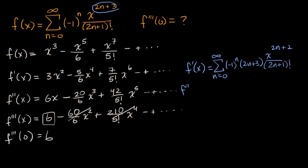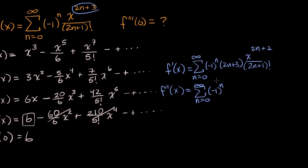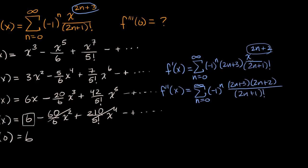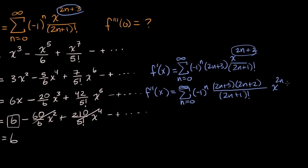For the second derivative, f double prime of x is the sum from zero to infinity of negative one to the n. You take the exponent out front again, so you get two n plus three times two n plus two, all over two n plus one factorial, times x to the two n plus one. Each time, I'm just taking the exponent out front, multiplying it, and decrementing the power.